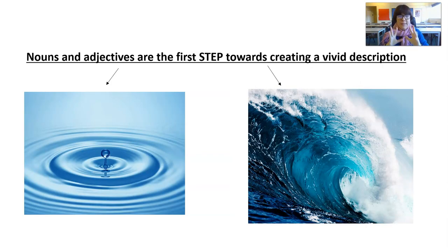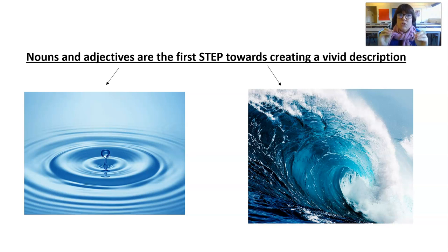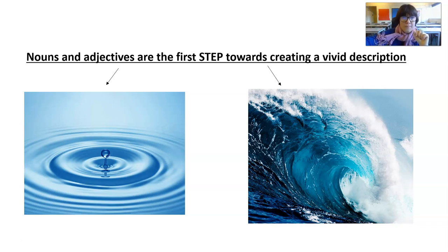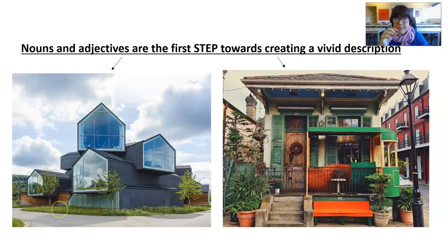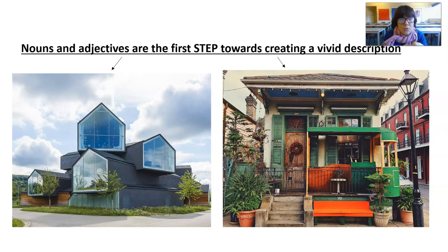You hopefully will have seen this slide before. Nouns — things, objects, people, places — and adjectives, which describe nouns, are the first step towards creating vivid description. It is the nouns and adjectives that give you two different pictures in your mind. If you just tell me that your story is taking place in a house, you might want me to imagine the one on the left-hand side, but what I might imagine is the one on the right-hand side.